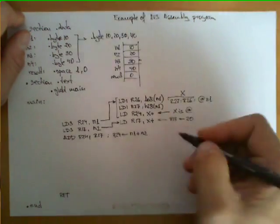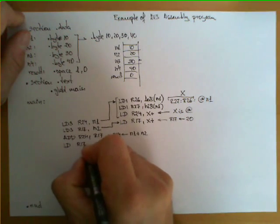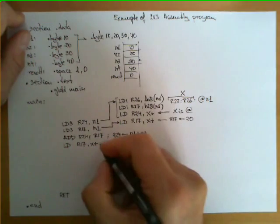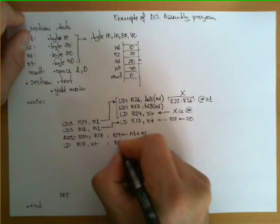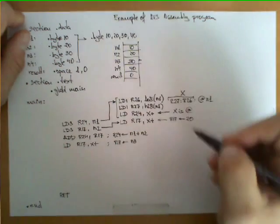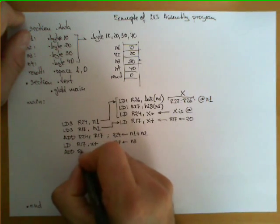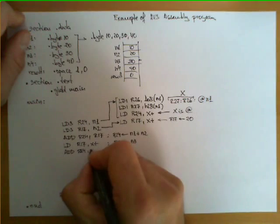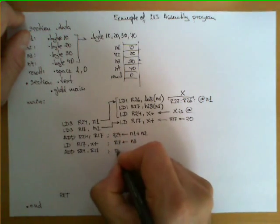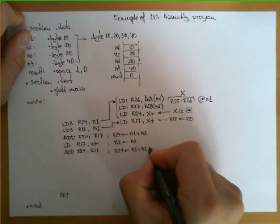So I could keep working on the expression doing the following now, LD R17 X plus and now what I'm doing here is that R17 now has the value of N3 or 30. And I can add it again, add R24 R17, so in this case R24 has N1 plus N2 plus N3.